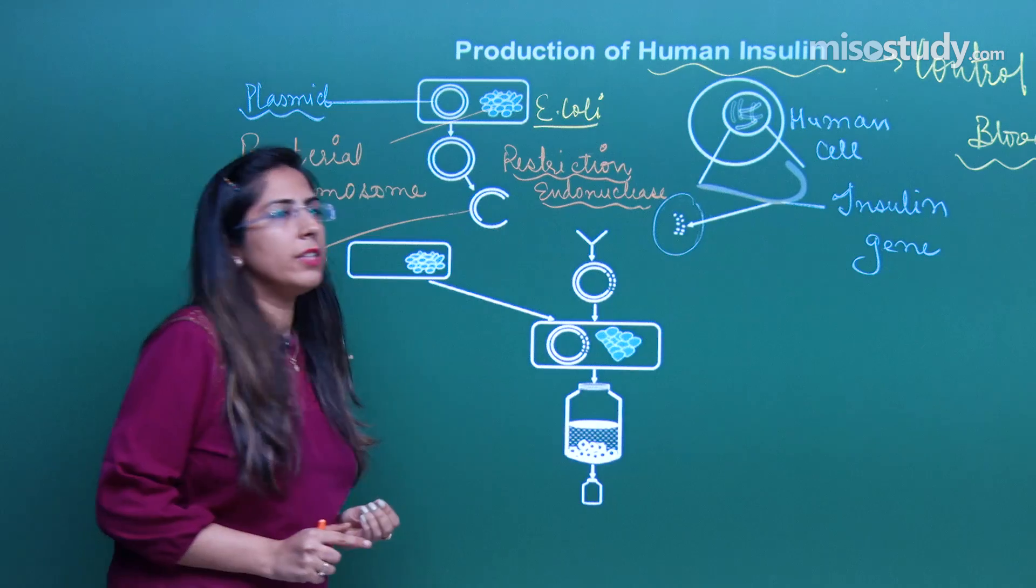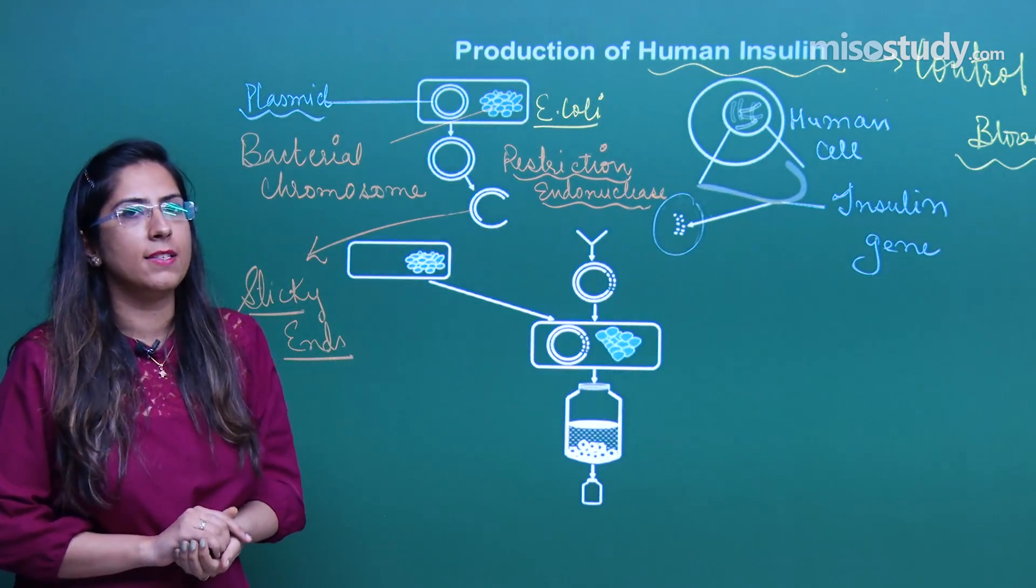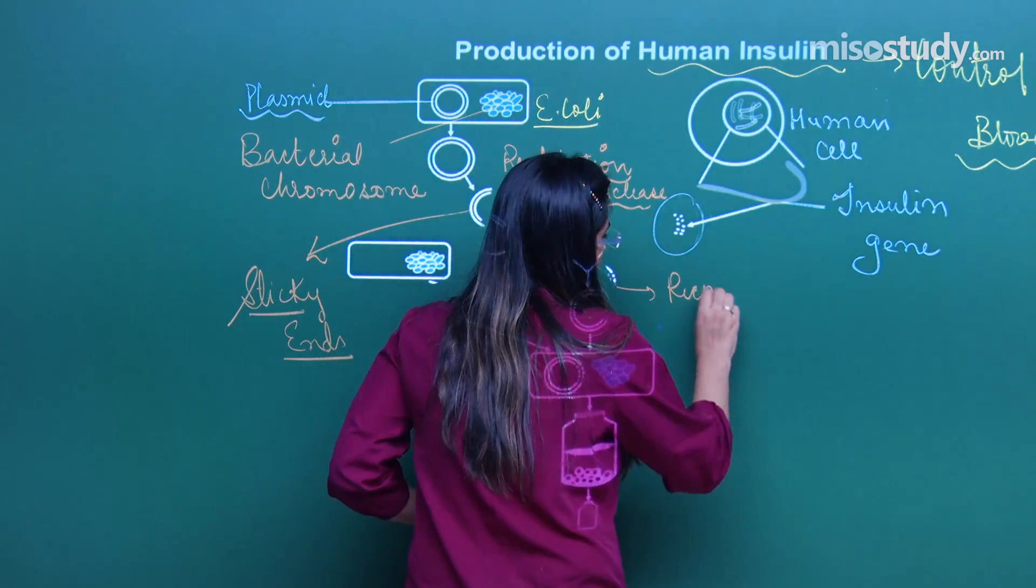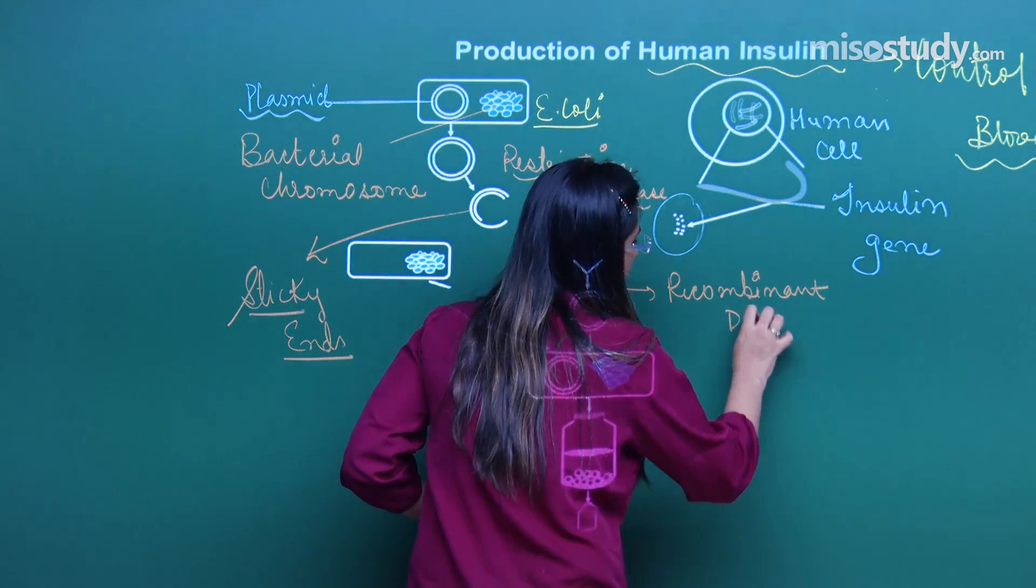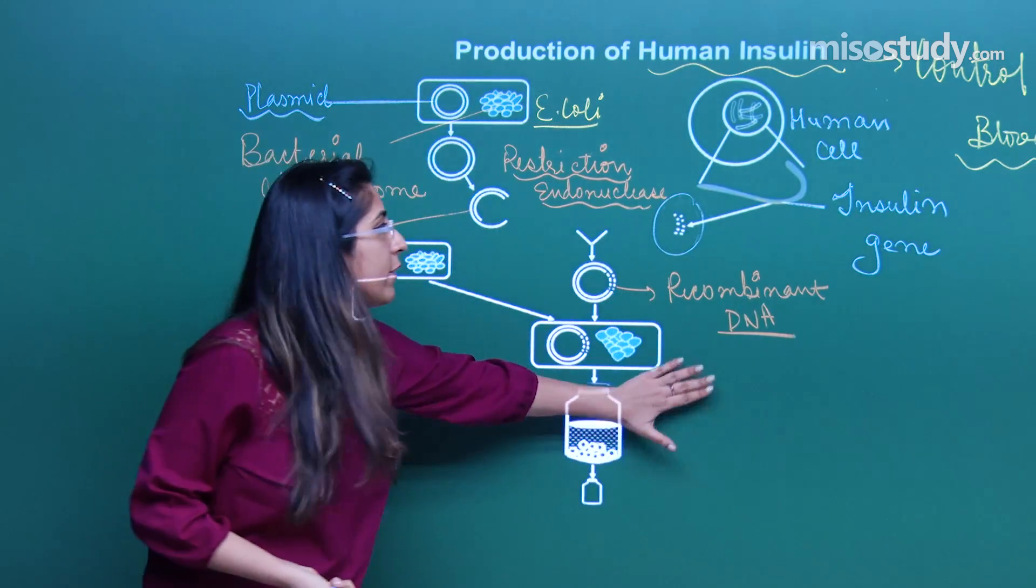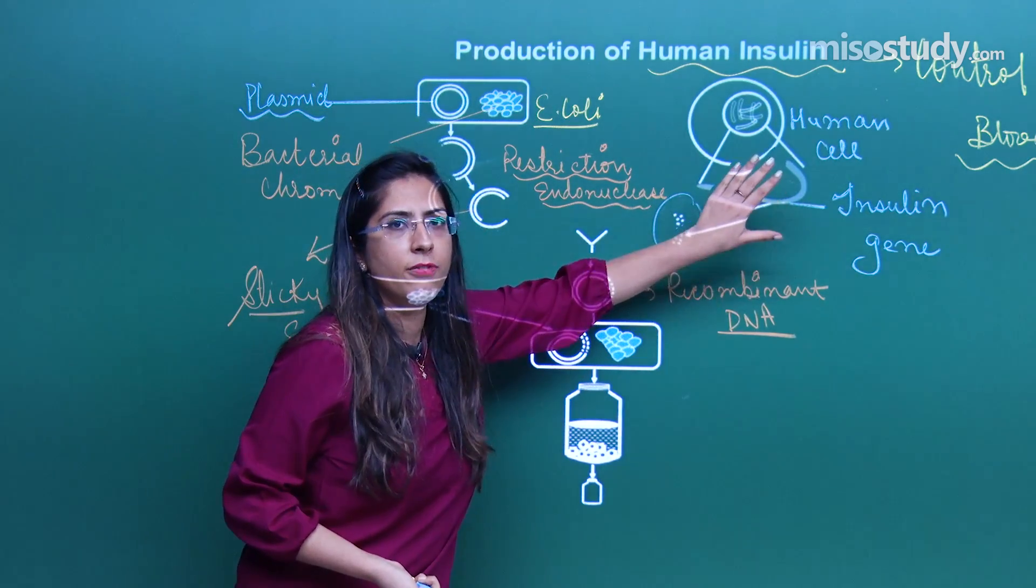When I will combine these two together, the thing which I will get over here, this is called recombinant DNA. That means it is that DNA which carries this particular foreign gene. This is our gene of interest.